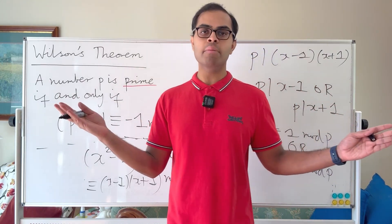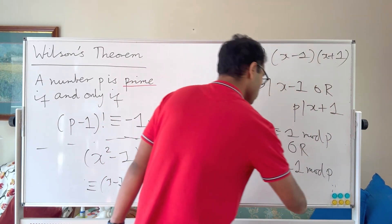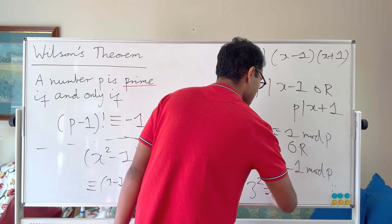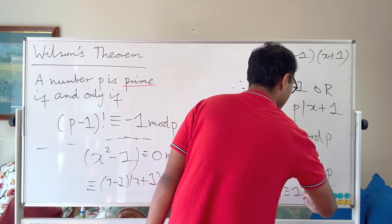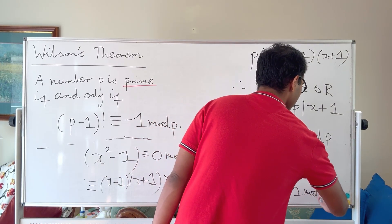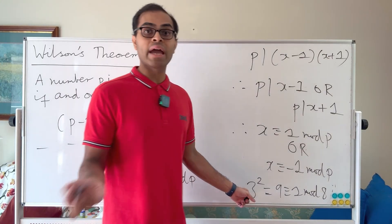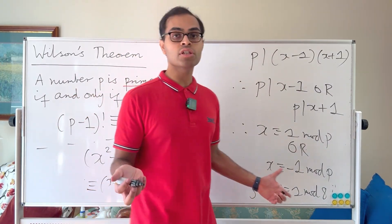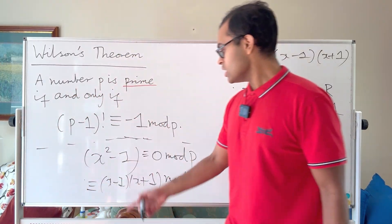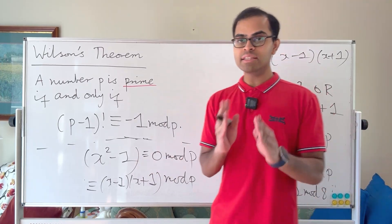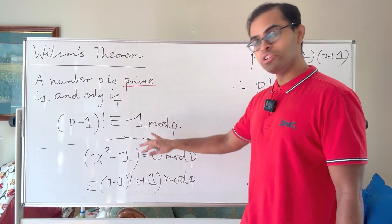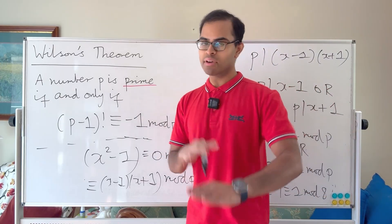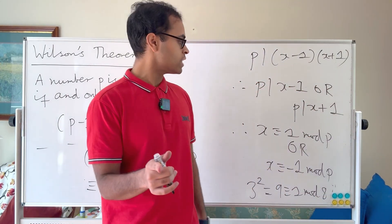As an example of why primality matters here: modulo 8, which is not prime, 3² = 9 ≡ 1 mod 8, but 3 is neither 1 nor -1 mod 8 (since -1 mod 8 is 7). So you can have extra solutions to x² - 1 ≡ 0 when the modulus isn't prime. You have to be careful when working in new number systems — this structure where inverses always exist is what's called a field.